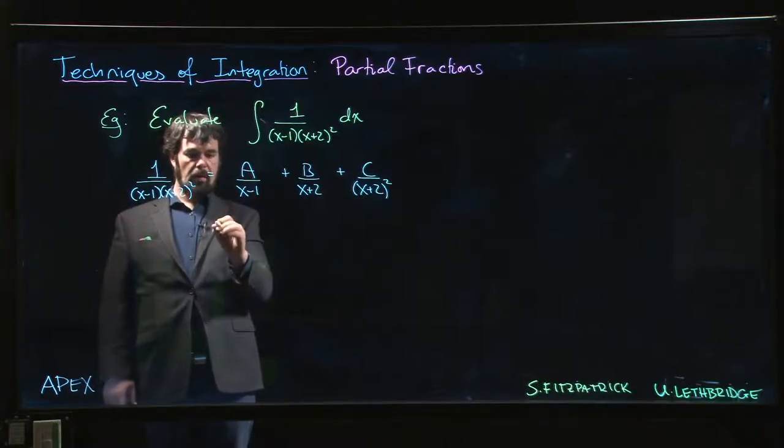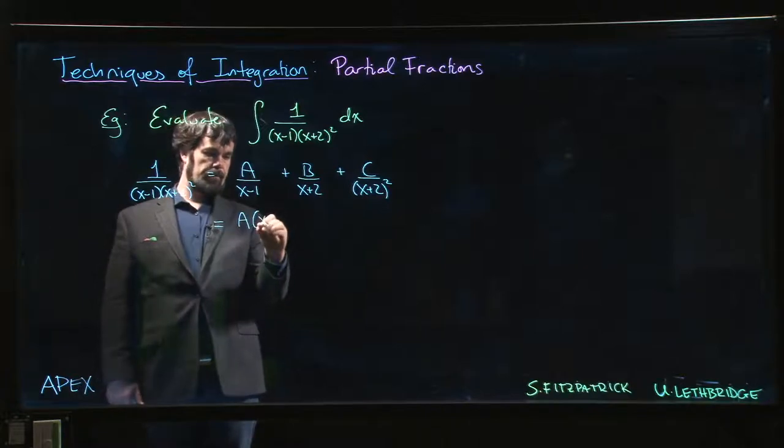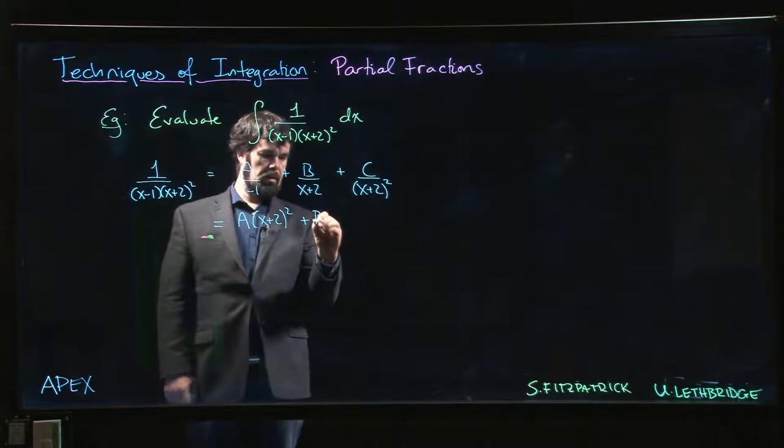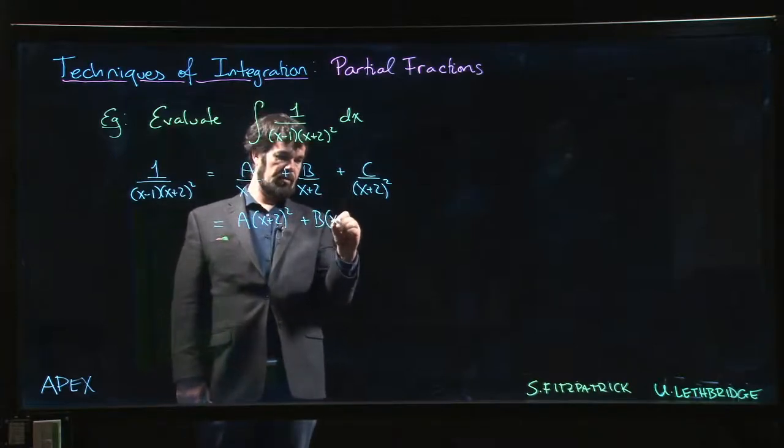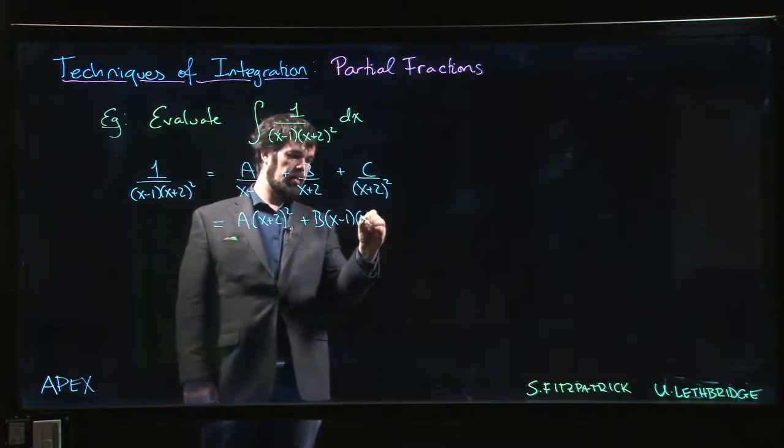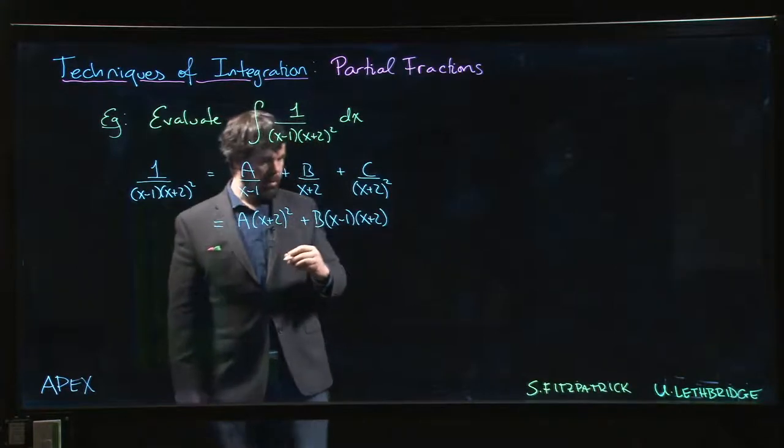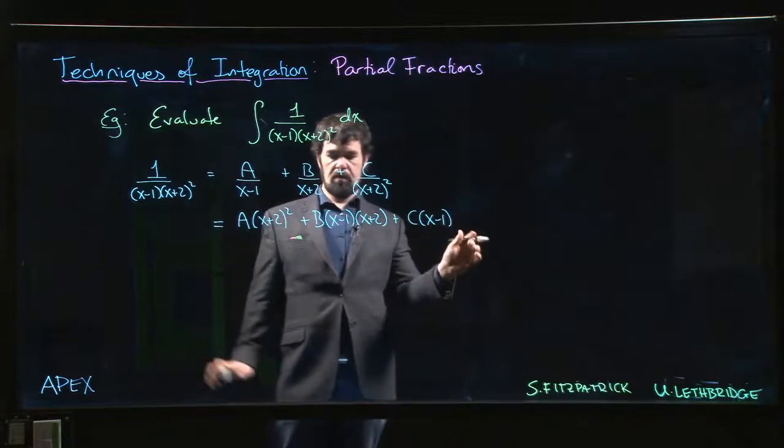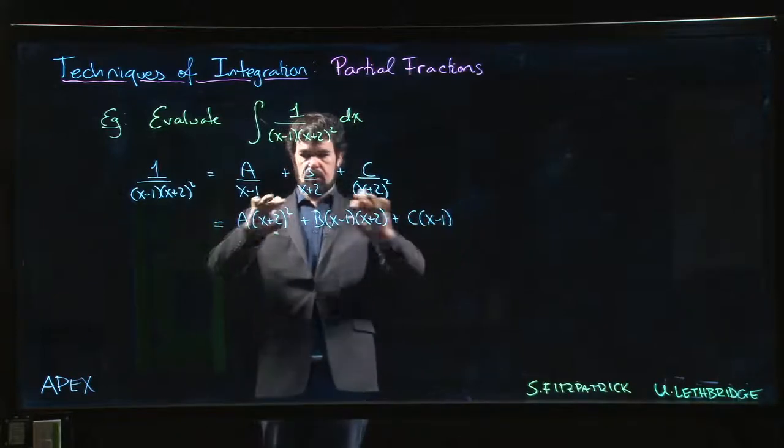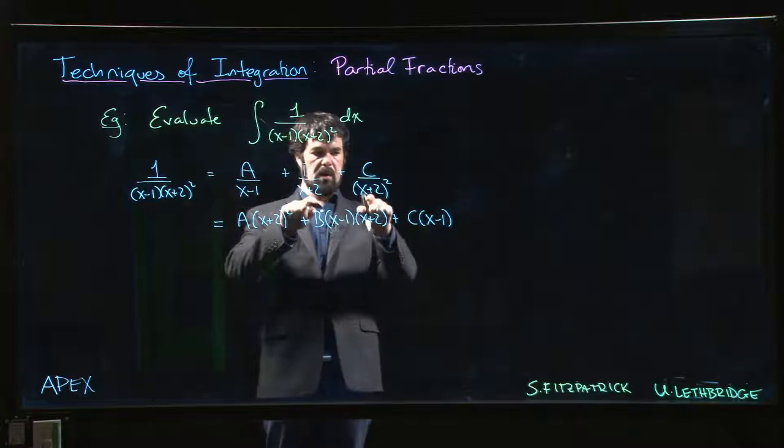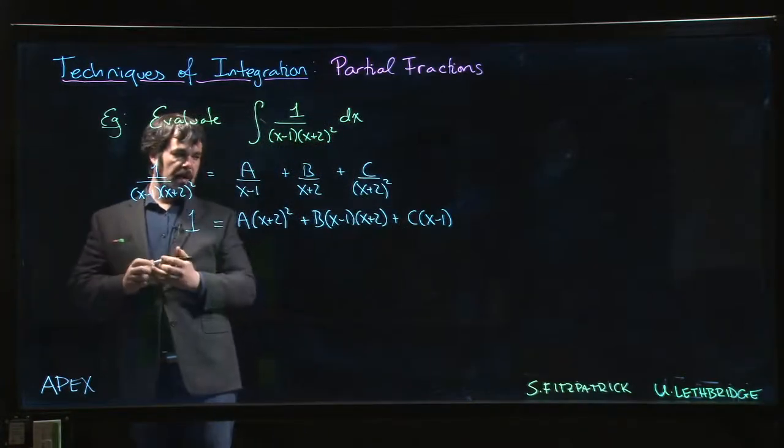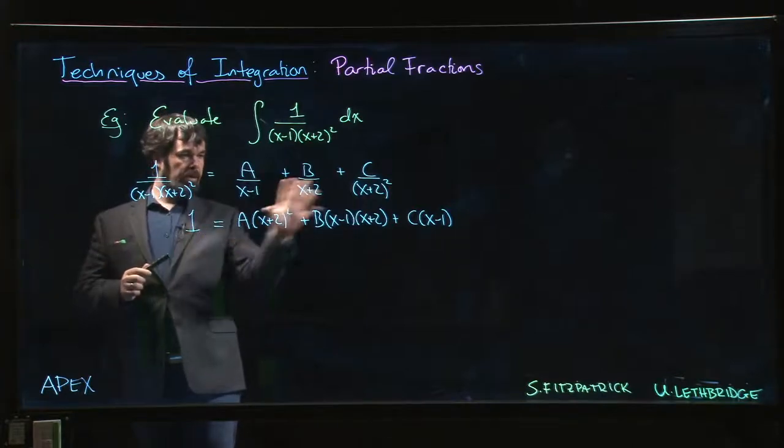So what we can do is this sort of intermediate approach where we say if we get a common denominator but don't actually multiply things out, then we have A times (x plus 2) squared plus B times (x minus 1) times (x plus 2) plus C times (x minus 1). So that would be the numerator all over that common denominator of (x minus 1) times (x plus 2) squared. This should be equal to the numerator over here, so we should expect that we have this equality: 1 is equal to that.